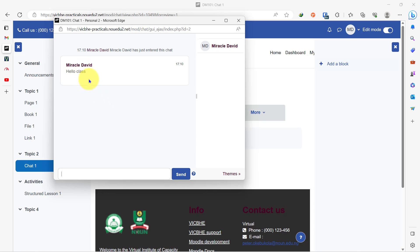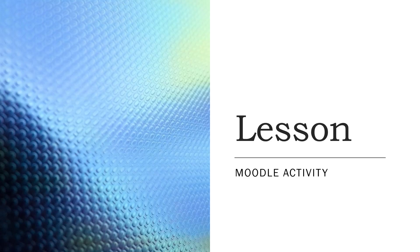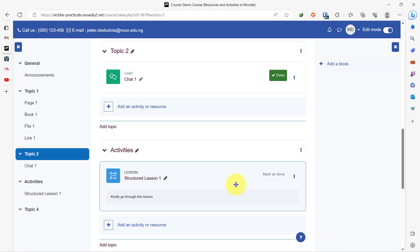The lesson activity is a very rich activity on Moodle. It helps you set a structured lesson path for students, and you can make it so interactive that it incorporates knowledge checks, quizzes, pages, branch scenarios, and a host of others. I have gone ahead to do something very quick just so you'd see how this lesson activity works. On your own, you can play around with this to see if it's something that you can adopt on your course page.